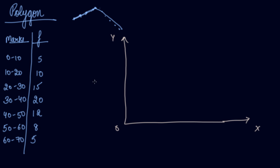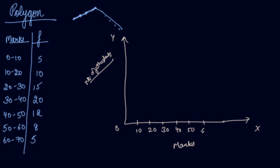On the y-axis you always take the number of students, that is the frequency. On the x-axis you take the marks, that is the class intervals from 0 to 10, 10 to 20, 20 to 30, 30 to 40, 40 to 50, 50 to 60, and 60 to 70. Here we will mark the scale as 5, 10, 15, 20.